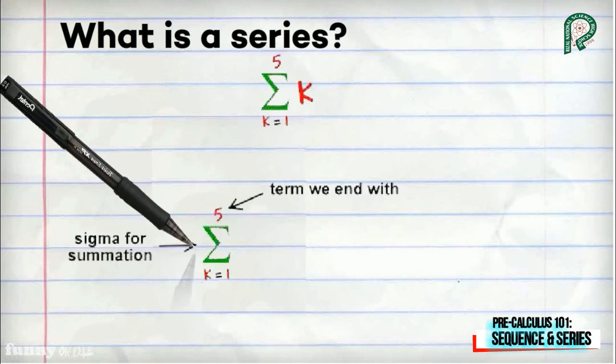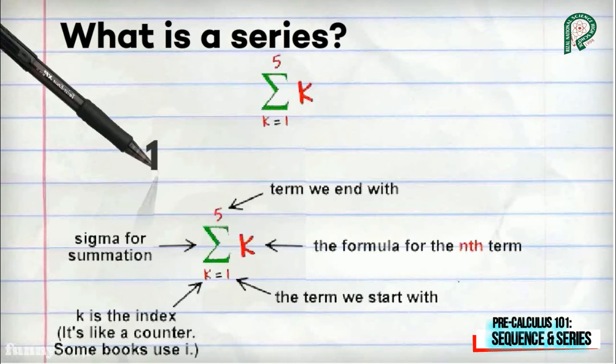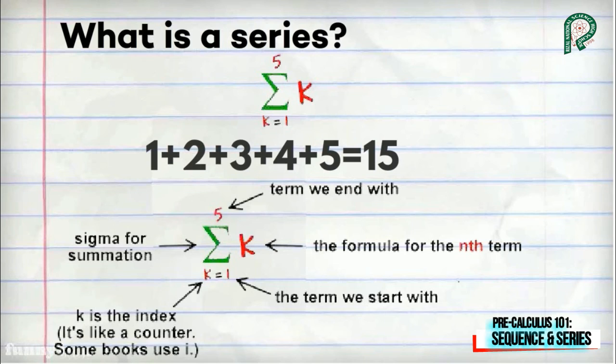The Sigma notation should be read as this: the summation of k, where k is taken from 1 to 5. Here, 5 is the term we end with, k is the formula for the nth term, 1 is the term we start with, k is the index, and Sigma stands for summation. But this is also equal to 1 plus 2 plus 3 plus 4 plus 5, which equals 15.